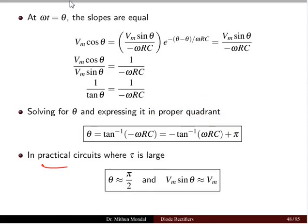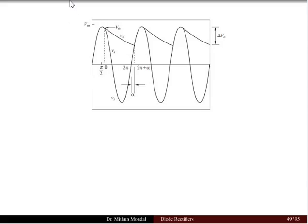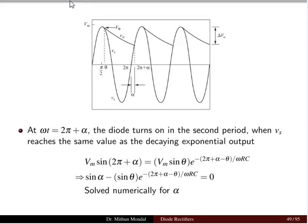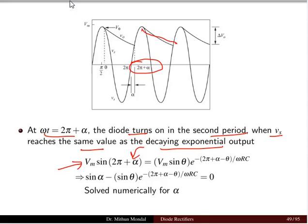For a practical circuit, the time constant τ is very large, so θ ≈ π/2 and Vm sin θ ≈ Vm. At ωt = 2π + α the diode turns on again in the second period and we can obtain the voltage as the same decaying exponential. A similar expression in terms of α can be derived, and α must be solved numerically.